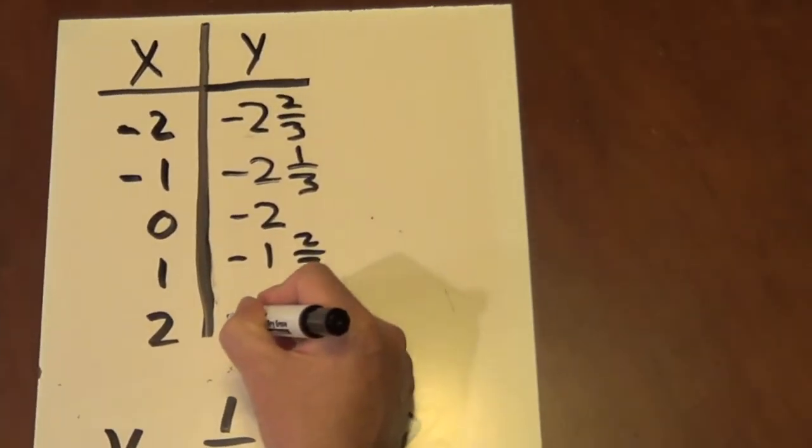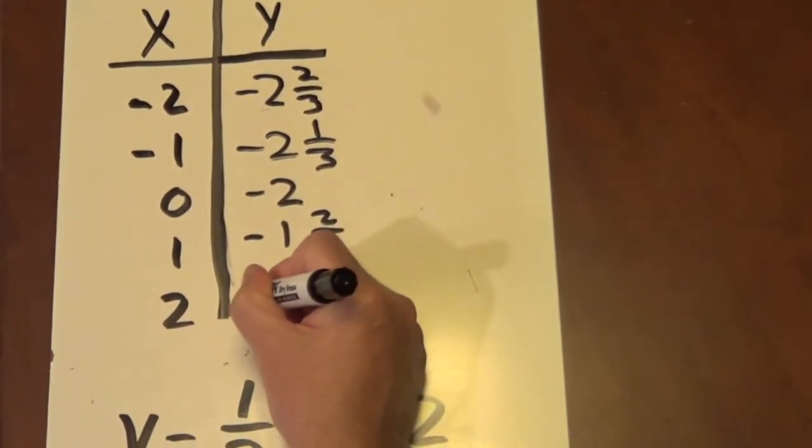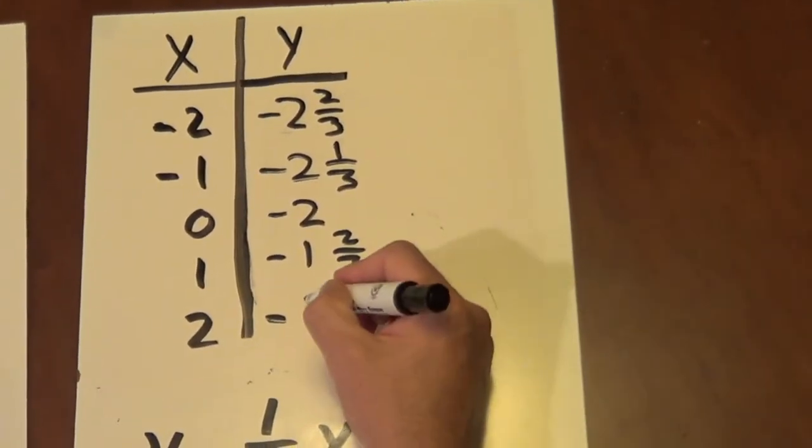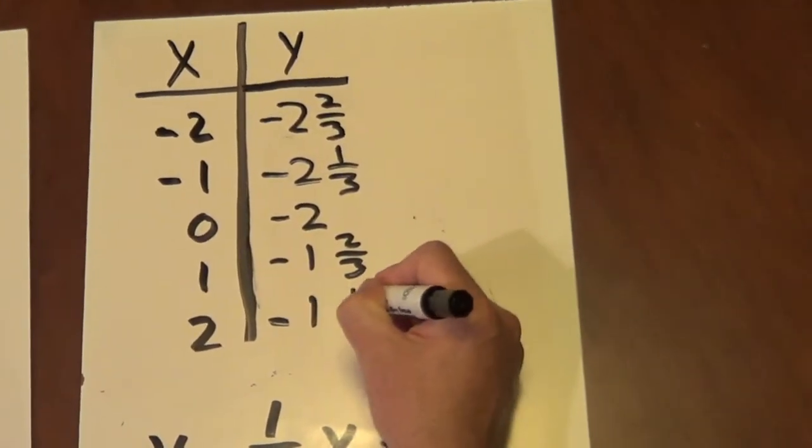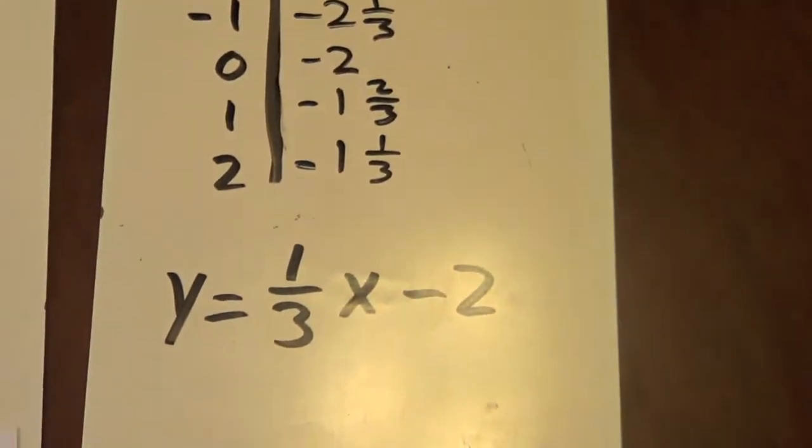And finally, if we put x is 2, we would get y equals negative 1 and 1 third. And there you have it.